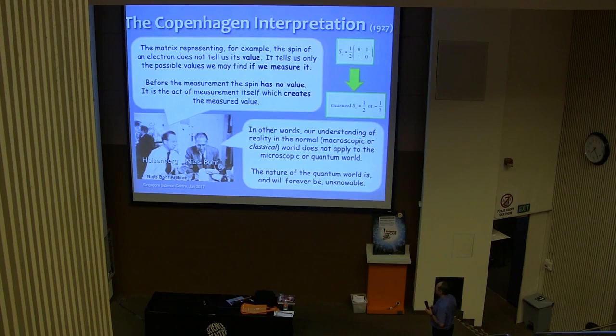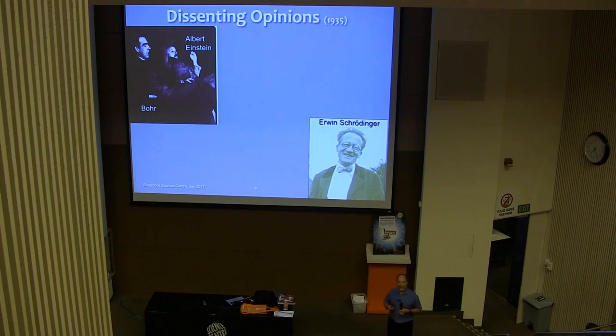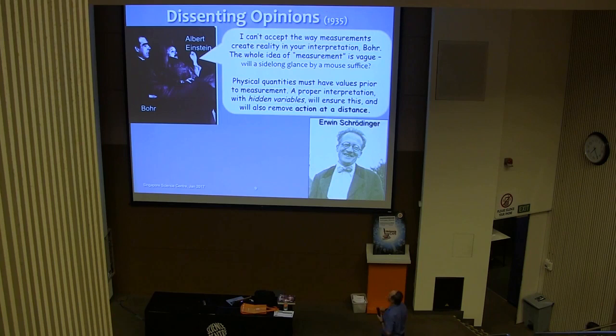So pretty radical idea to come up all on the basis of this mathematical theory, and not surprisingly, not all physicists were happy with this idea. And in fact, the most famous physicist of the 20th century, Albert Einstein, was not happy with this idea. So he wrote, along with a couple of his colleagues in 1935, a very famous paper criticizing the Copenhagen interpretation from Bohr. And so here he is explaining what he doesn't like. I can't accept the way measurements create reality in your interpretation, Bohr. The whole idea of measurement is vague. And so this is actually a real quote from Einstein. It says, will a sidelong glance by a mouse suffice? Is that enough to be a measurement?